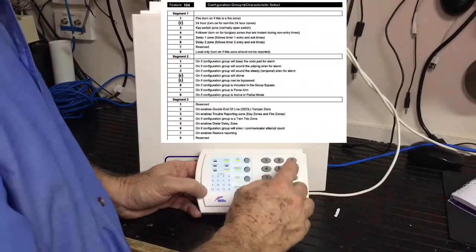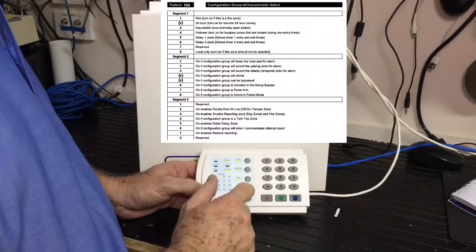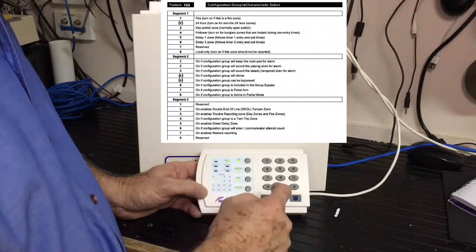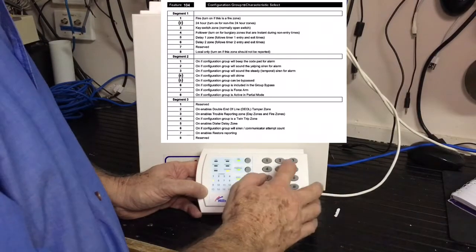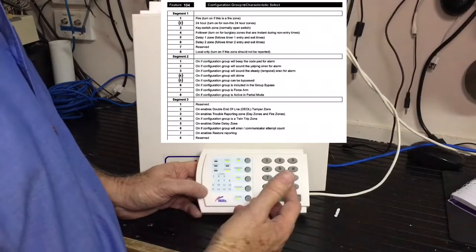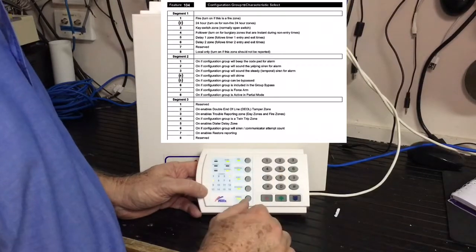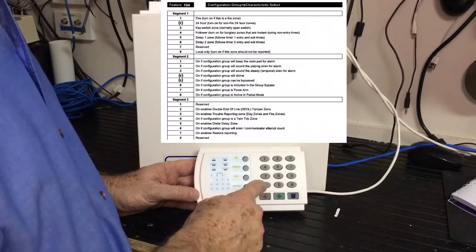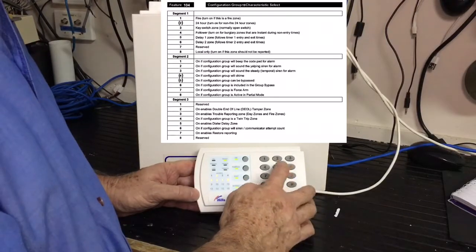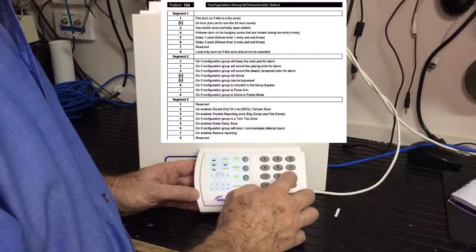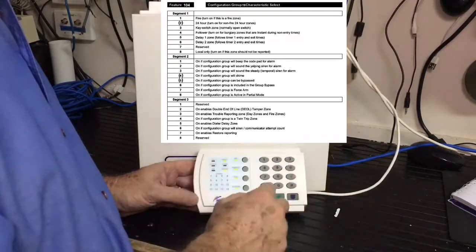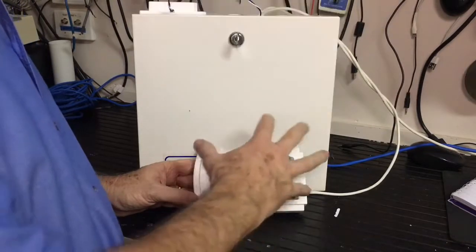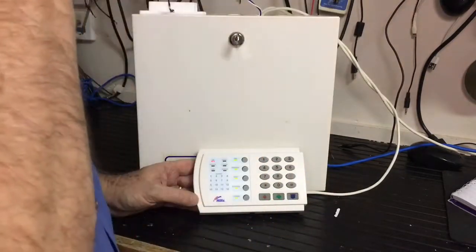We're only really interested in the first three segments. So we're going to turn on two, which makes it a 24-hour zone. In this next one here, we only really want four and five on. So we want the two and the six off. So we get rid of the two and the six. Put on the four. Four and five makes it chime and also makes it bypassable. So if we have a problem, you can actually turn that zone off. In the next segment, turn everything off. We don't need anything on at all. And the next couple of segments, we don't need to worry about as well. So we just come out of that.